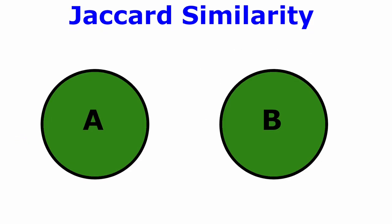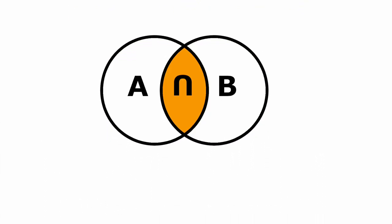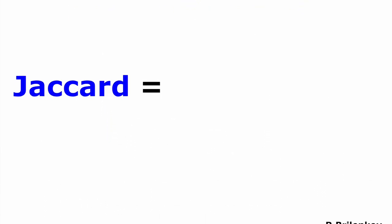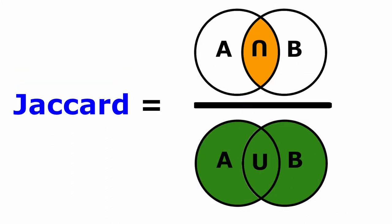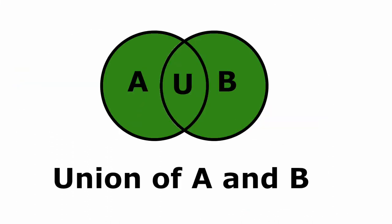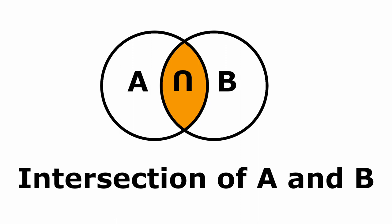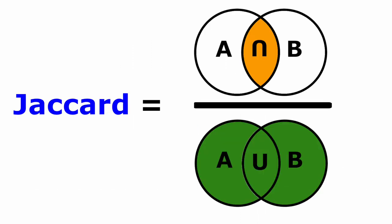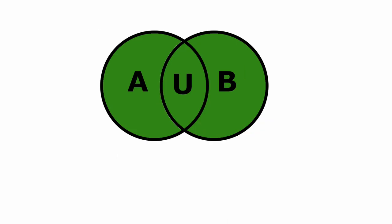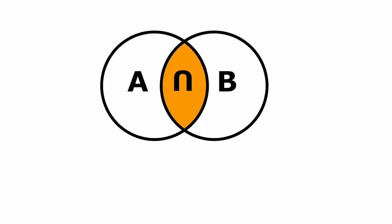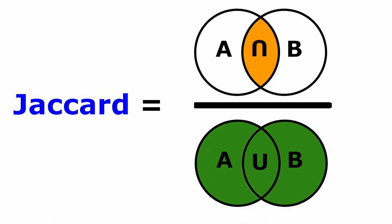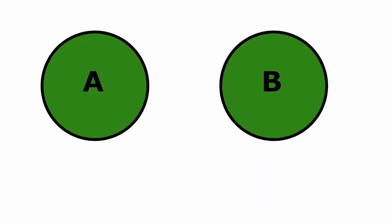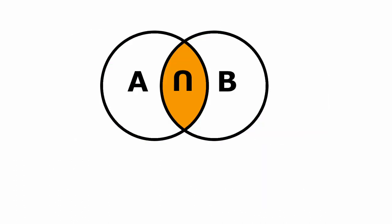So we are moving to the Jaccard index or similarity. The Jaccard similarity or Jaccard index is defined as the size of the intersection of the predictor and the true labels divided by the size of the union. Basically, perfect Jaccard would equal 1, while the worst would equal 0. It is used to compare a set of predicted labels for a sample to the corresponding set of labels in the true dataset. In other words, a similarity between two objects.